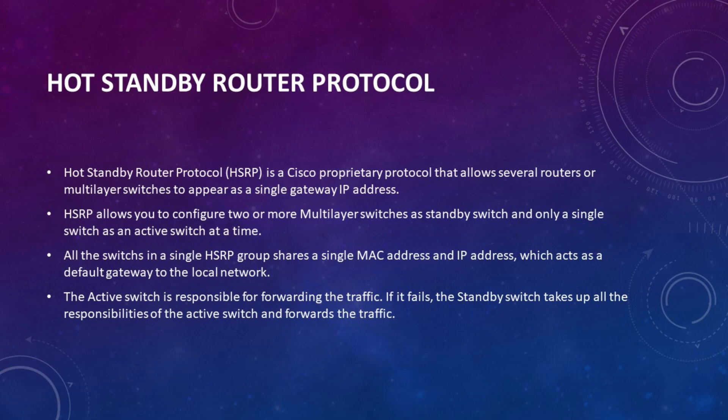HSRP allows you to configure two or more multi-layer switches as standby switches and only a single switch as an active switch at a time. All the switches in a single HSRP group share a single MAC address and IP address which acts as a default gateway to the local network. The active switch is responsible for forwarding the traffic; if it fails, the standby switch takes up all responsibilities and forwards the traffic.